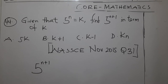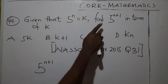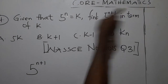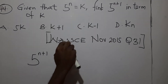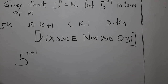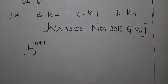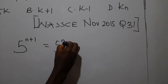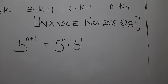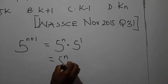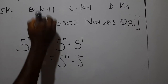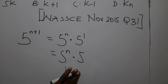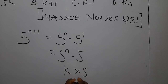WASSCE November 2015: given that 5^n = k, find 5^(n+1) in terms of k. We write 5^(n+1) = 5^n · 5^1 = k · 5 = 5k. The correct answer is A.